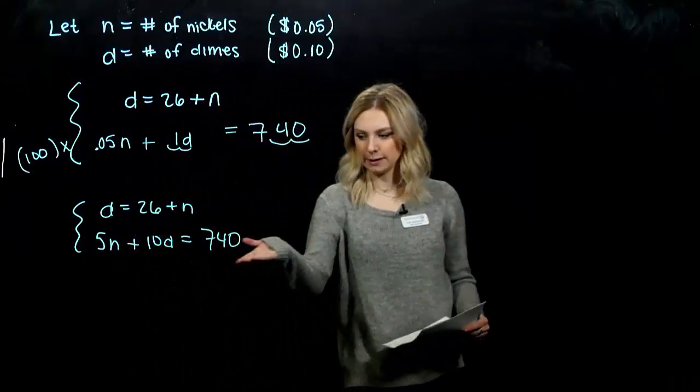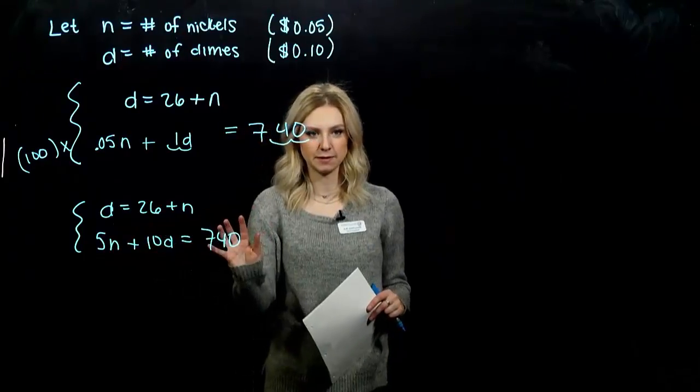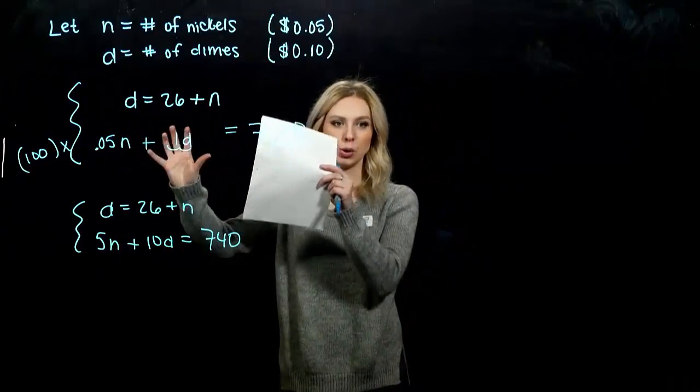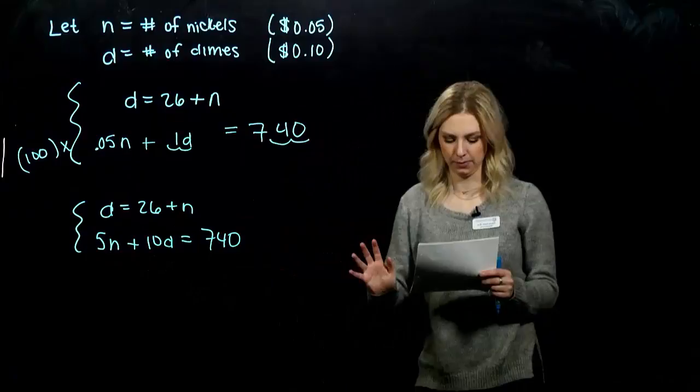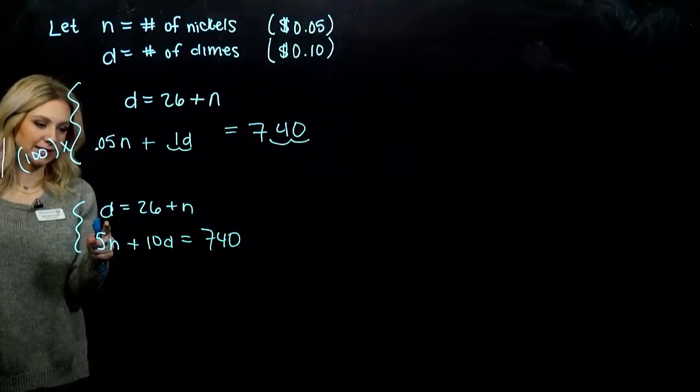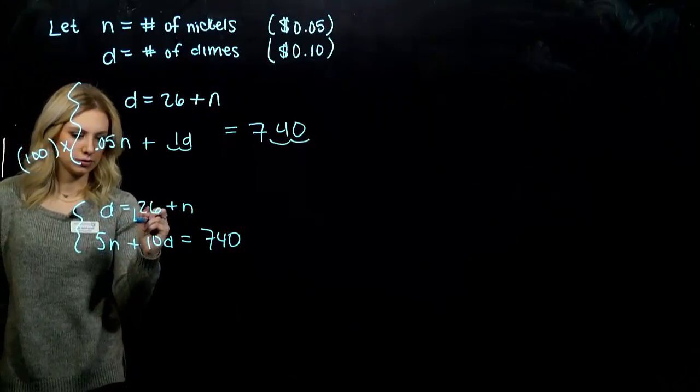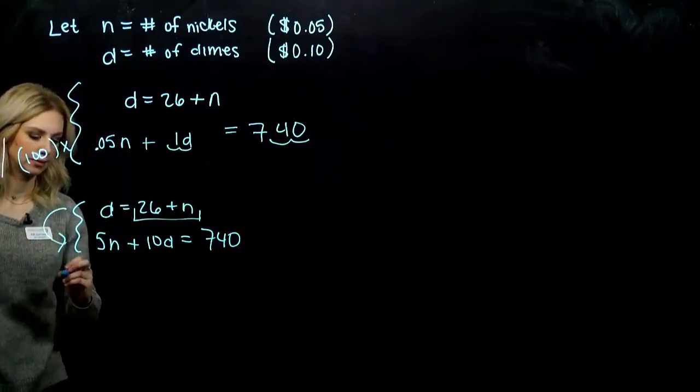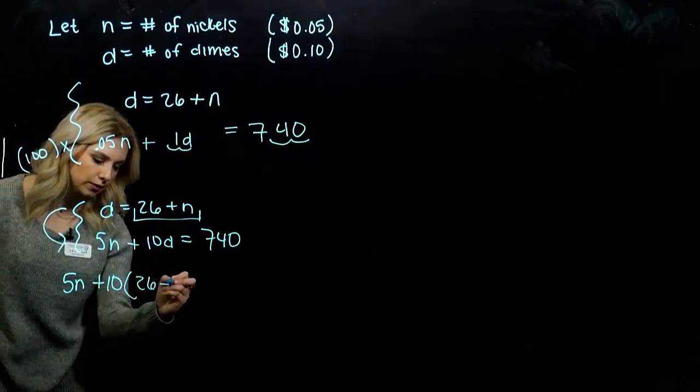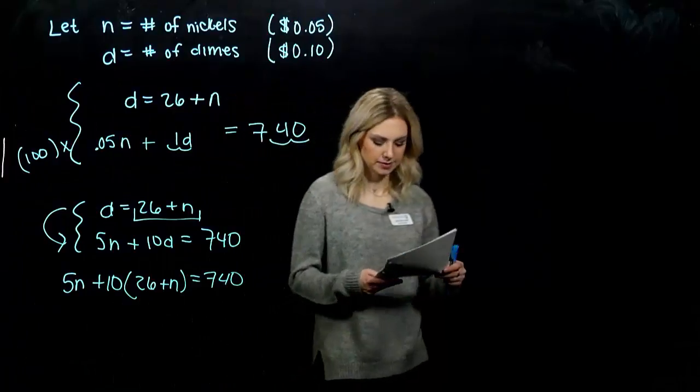What was given to us as dollars, but we can convert it all together. How do we want to solve? I have a variable that's isolated, so the easiest route is to substitute. I know d is equivalent to 26 plus n, so substitute the first one into the second: 5n plus 10 times (26 plus n) equals 740.